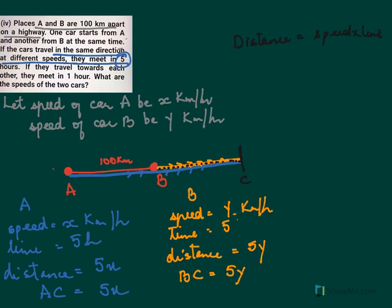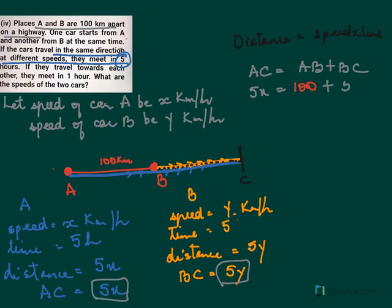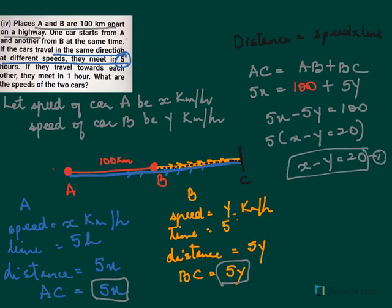From the figure, AC equals AB plus BC. AC is 5X, AB is 100, and BC is 5Y. So we have 5X equals 100 plus 5Y, which gives 5X minus 5Y equals 100. Taking 5 as common, we get X minus Y equals 20. This is equation 1.